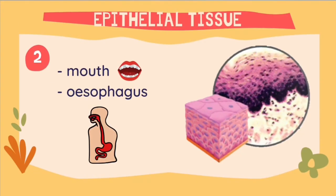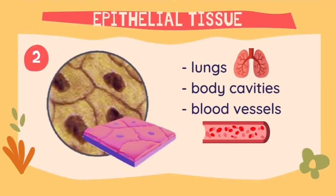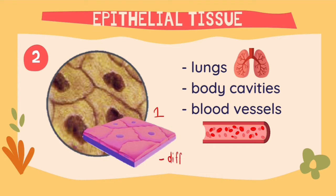The first structure consists of multiple layers of the epithelial tissue stacked upon one another. This structure can normally be found in the mouth and the esophagus of the human body. The second structure, on the other hand, is very thin and only consists of one layer of the epithelial tissue. This is so that diffusion can occur easily at places such as the lungs, the body cavities, and blood vessels.